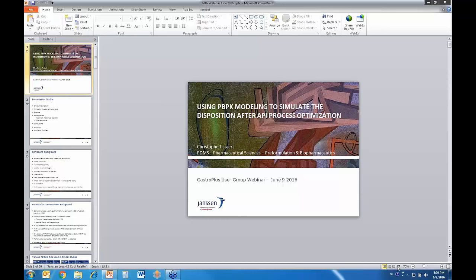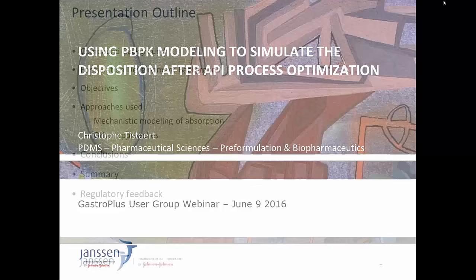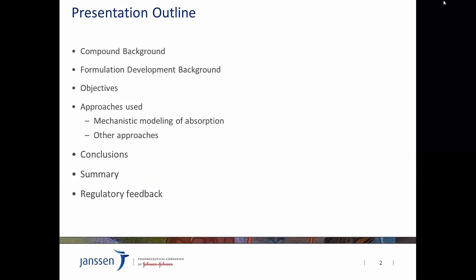Thank you to the GastroPlus user group for organizing this seminar and for the possibility to present this work. I'll talk about a case study where we use mechanistic modeling of absorption to simulate the disposition after API process optimization during late-phase development. I'll cover background information, formulation development background — what changes in transitioning from early to late development — the objectives of the modeling work, the approaches used, mainly mechanistic modeling of absorption, and conclusions with regulatory feedback received.